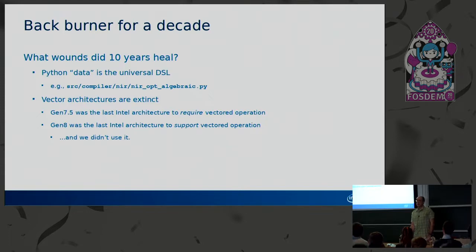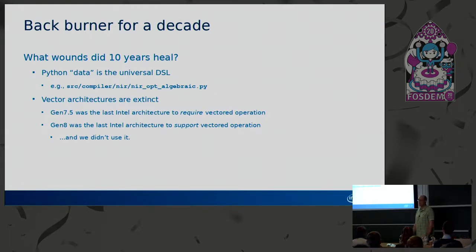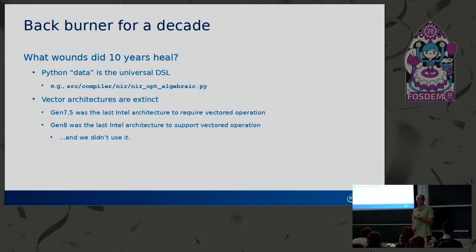Vector architectures are dead. All that swizzling and write masking nonsense is just irrelevant because all those architectures died off. The last Intel architecture where we had to use a vector-oriented thing was Haswell, which was years ago. Broadwell supported it but didn't require it, and we never used it in the driver we shipped. There are still a few architectures with some SIMD-within-a-register kinds of things — like 4x8 instructions on VC4 operating on four parallel bytes in a 32-bit register — but those look like traditional SIMD without the craziness of swizzling and write masking.